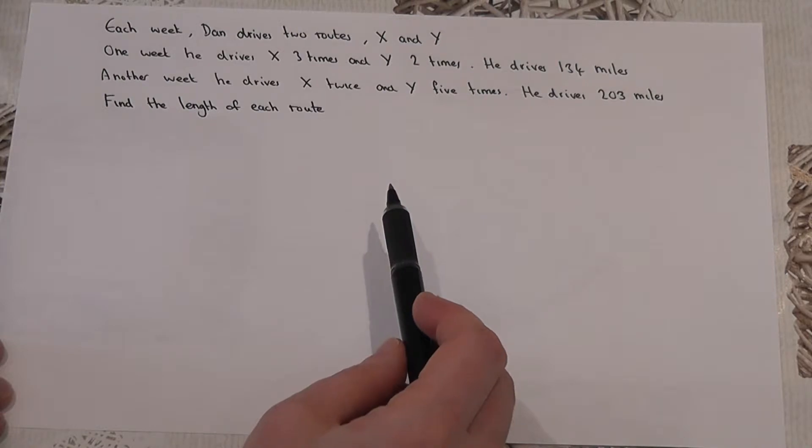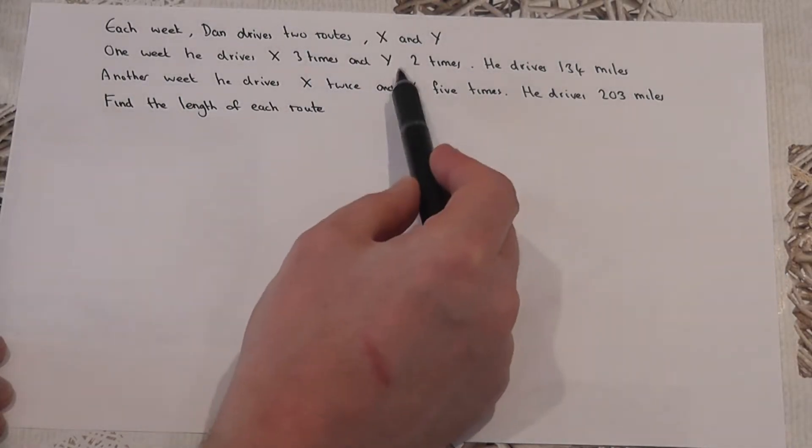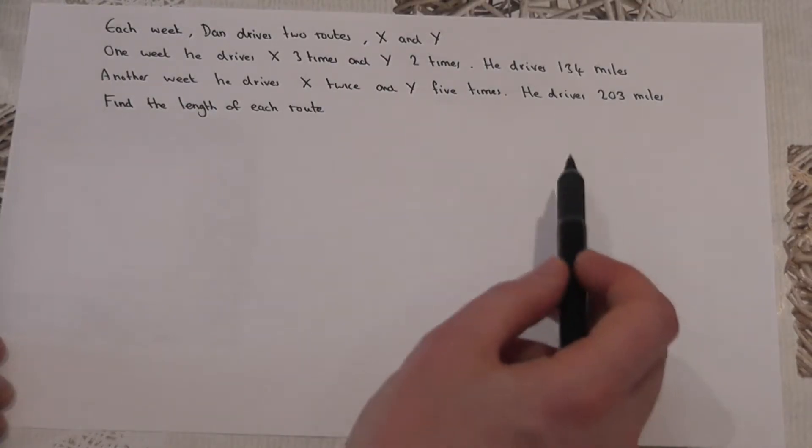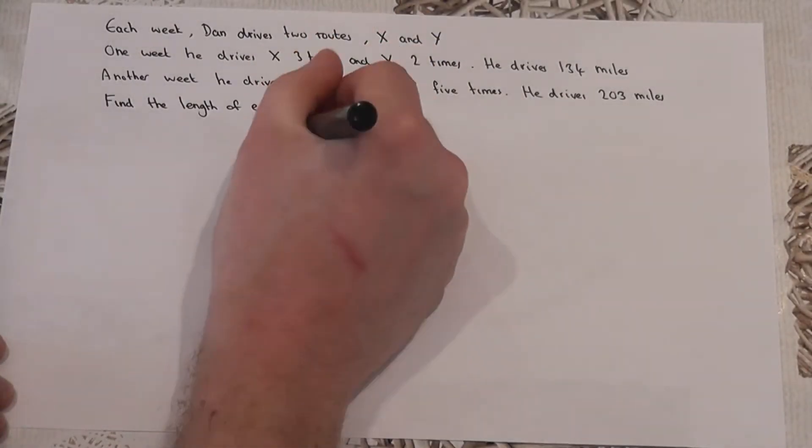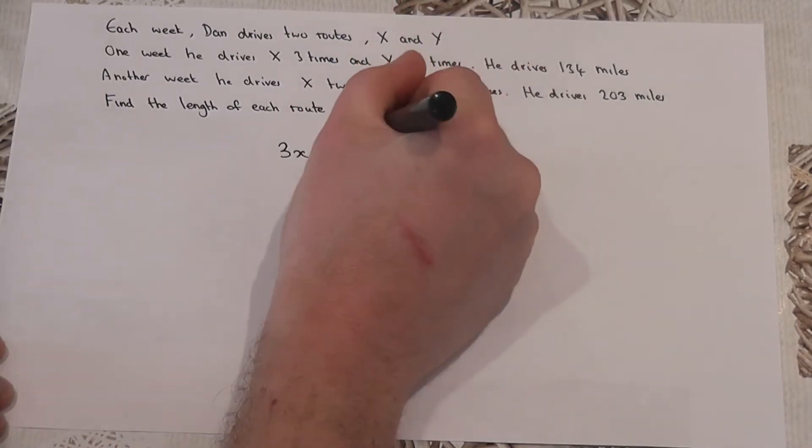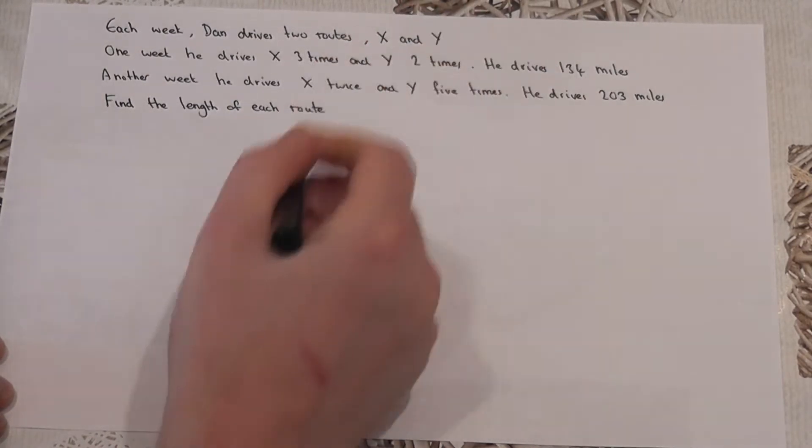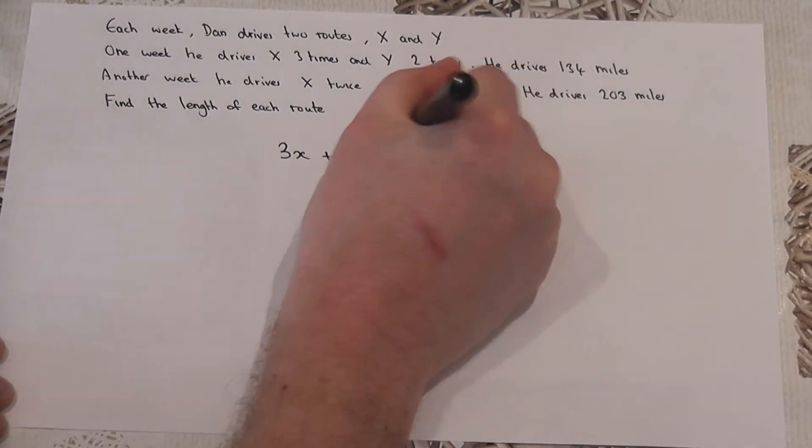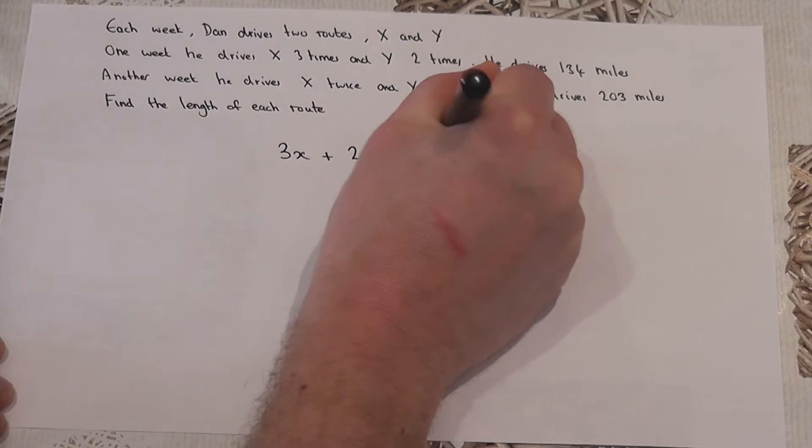One week he drives x three times and y two times, and he drives 144 miles in total. I can turn this into an equation, which is basically three lots of x and two lots of y. He drives x three times and y twice. The total of that has got to equal 134 miles.